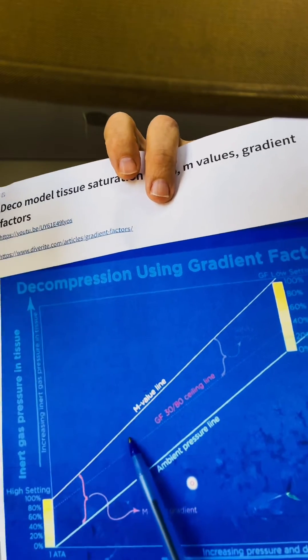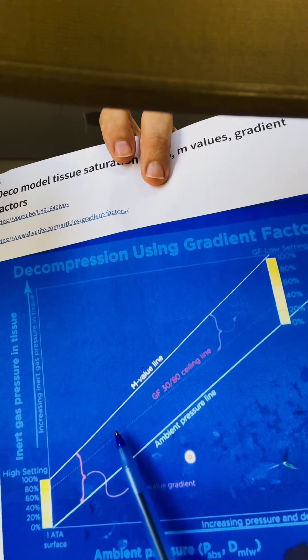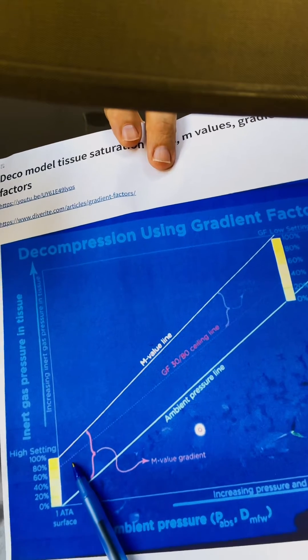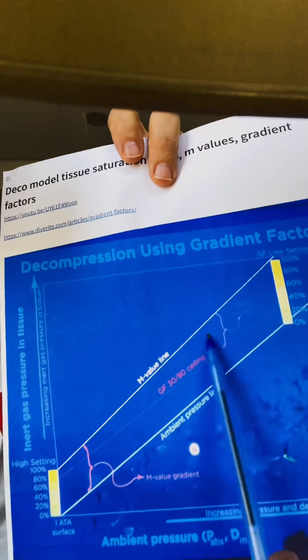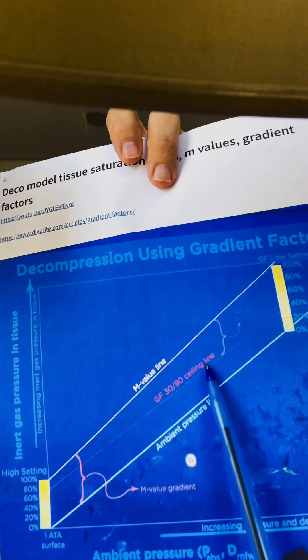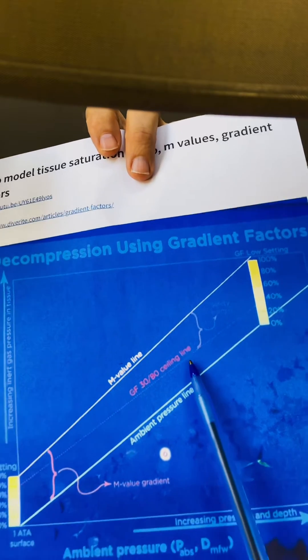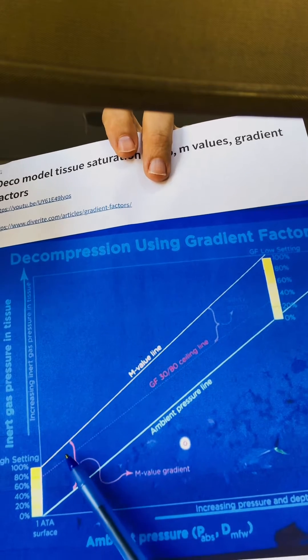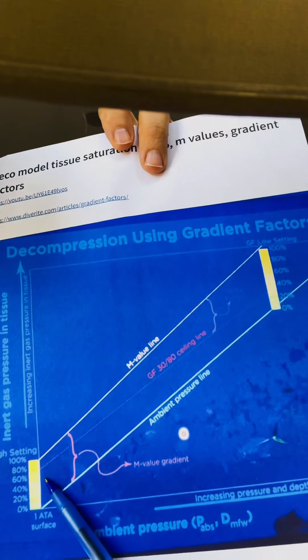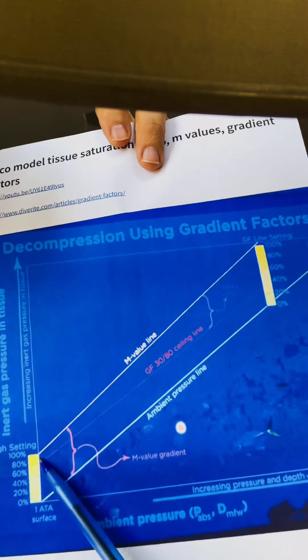Your percentage of saturation gets higher and closer to the M line as you ascend, based upon that high gradient factor number you put in your computer. So this is causing deep stops — the low number is preventing you from going up past your low gradient factor setting until you're almost at the surface. Then your high number is going to be your very last stop, preventing you from reaching the surface. It's deco stops. That's what it is.